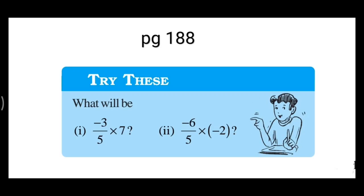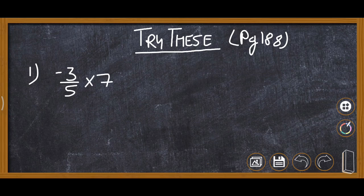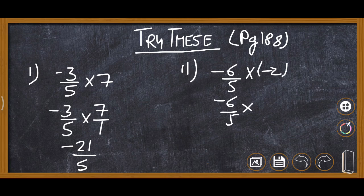On page 188, the Try These questions involve multiplication. First: -3/5 multiplied by 7, written as -3/5 × 7/1. Multiplying -3 by 7 gives -21, and 5×1 = 5, so the answer is -21/5. Next: -6/5 × -2, which gives minus times minus = plus, so 12/5 is the answer.